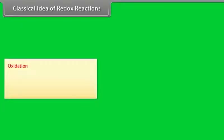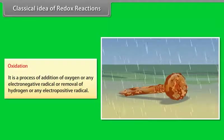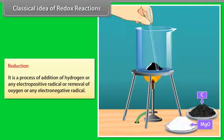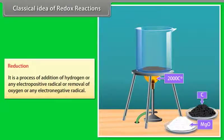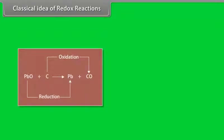Classical idea of redox reactions: Oxidation is a process of addition of oxygen or any electronegative radical, or removal of hydrogen or any electropositive radical. Reduction is a process of addition of hydrogen or any electropositive radical, or removal of oxygen or any electronegative radical. For example, in the reaction of PbO and carbon, oxygen is being removed from lead oxide and added to carbon. Thus, PbO is reduced while C is oxidized.